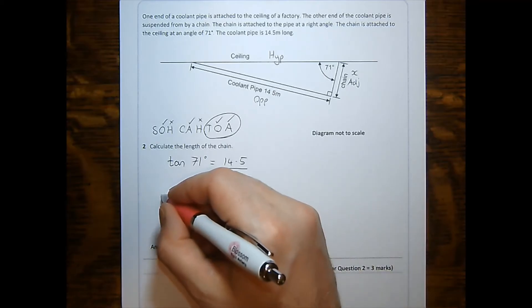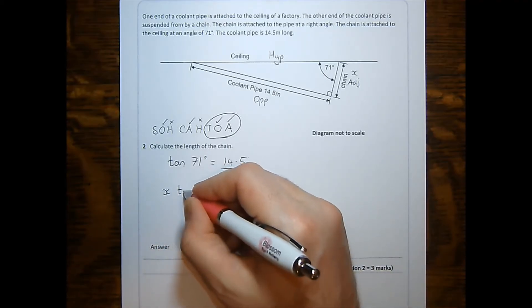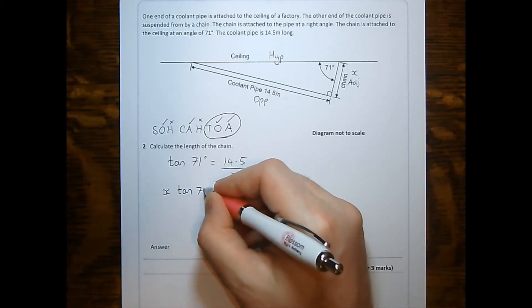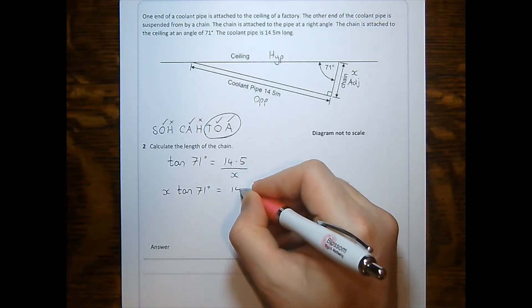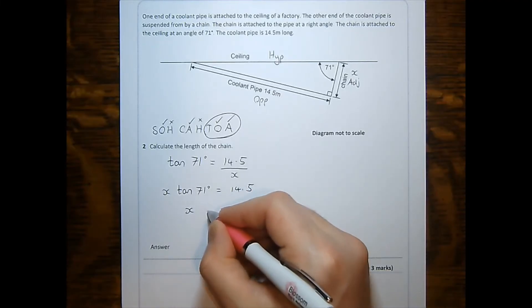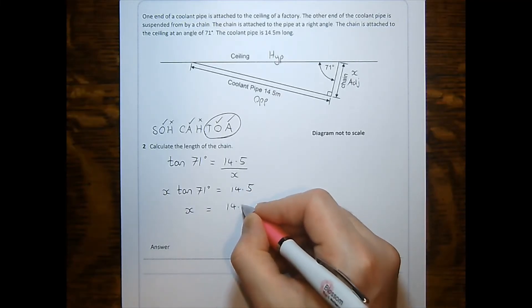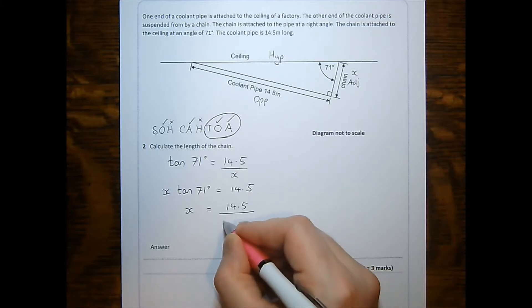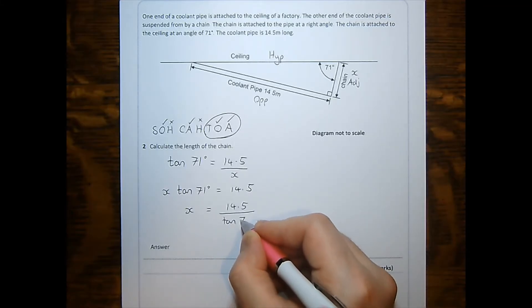Rearranging is in two steps. Multiplying both sides by x to get x tan 71 degrees equals 14.5. And then dividing both sides by tan 71 degrees gets x equals 14.5 divided by tan 71 degrees.